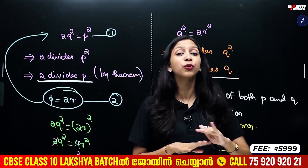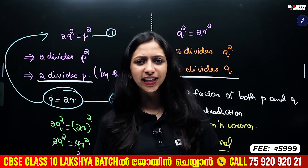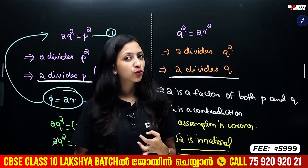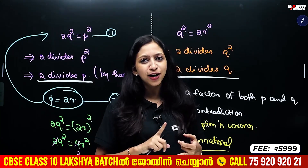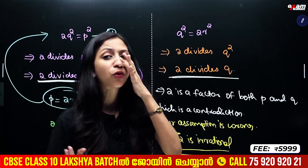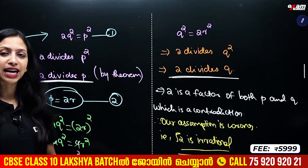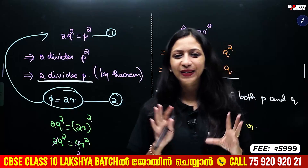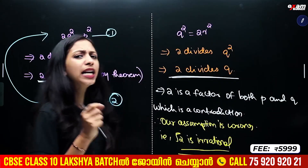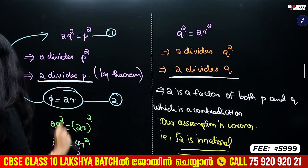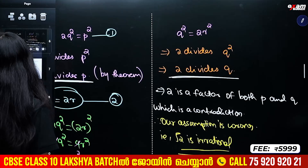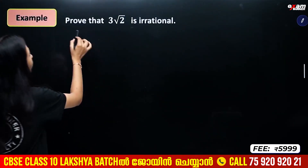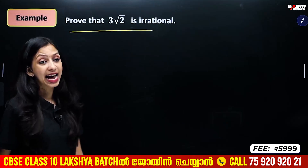What is the proof of irrationality? This is very important. The same approach applies to root 3 and root 5 — this proof works in the same format. This is root 2, and similarly for root 3 and root 5.